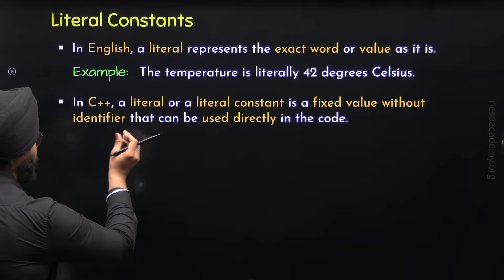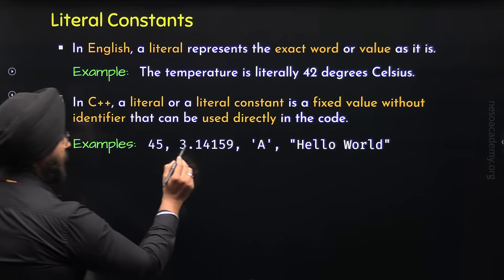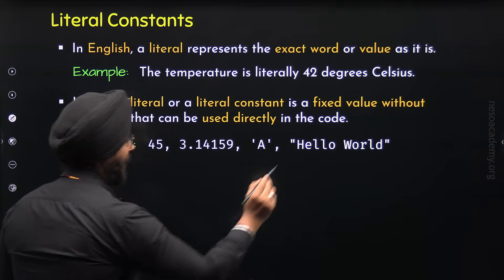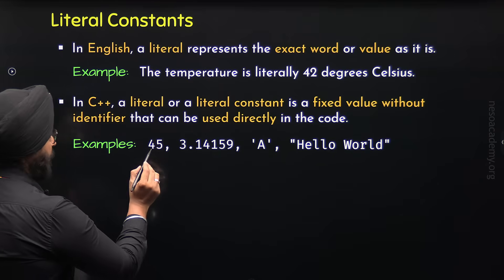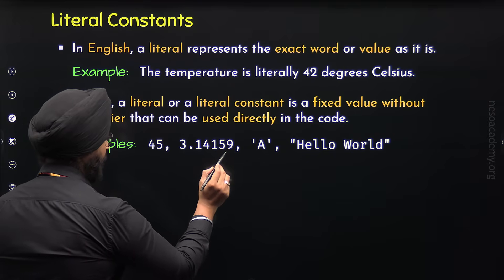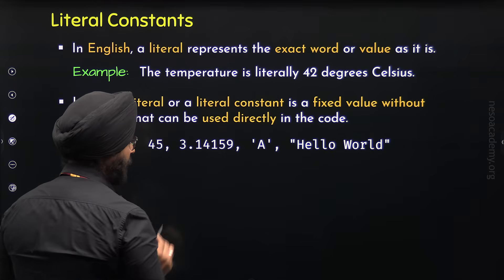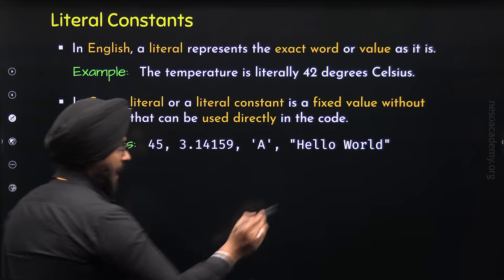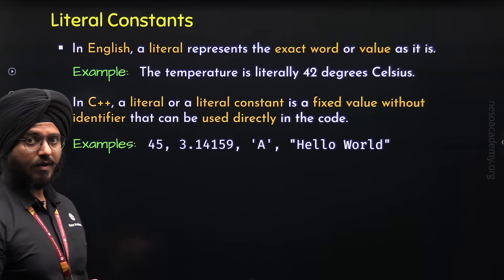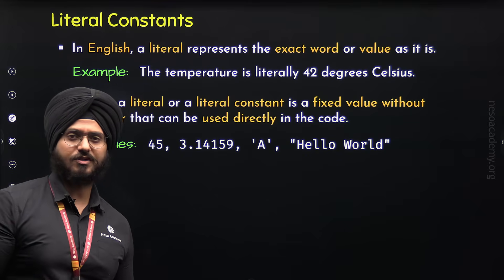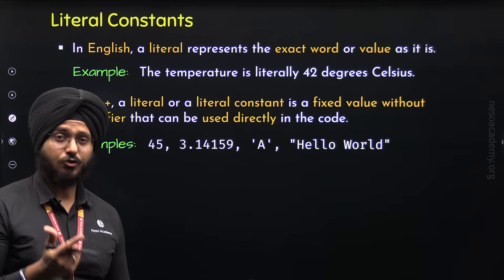Let's see some examples of literals in C++: 45 is an integer literal; 3.14159 is the floating point literal; capital A within single quotes is the character literal; and 'hello world' within double quotes is the string literal. From now on in this course, I will address literal constants simply as literals, as this is the most common interpretation.